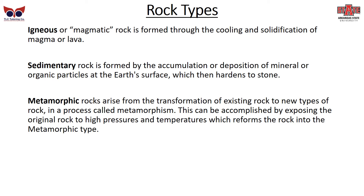Within the Earth, there are three major rock types. First is igneous, or magmatic rock, which is formed through the cooling and solidification of magma or lava. Second is sedimentary rock, formed by the accumulation or deposition of mineral and organic particles at the Earth's surface, which then hardens to stone. Metamorphic rock arises from the transformation of existing rock to new types, usually in a process called metamorphism, accomplished by exposing the original rock to high pressures and temperatures.